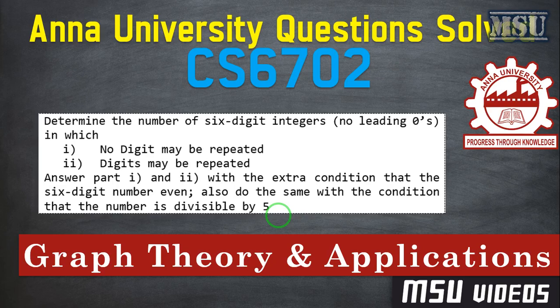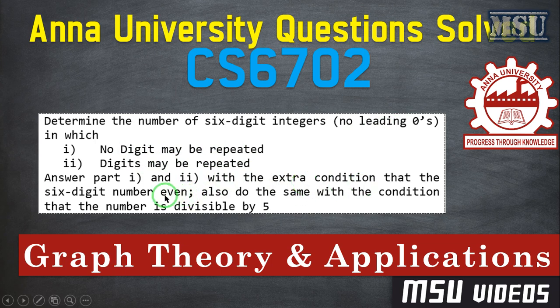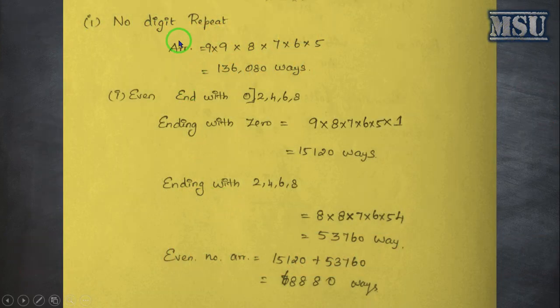Hi friends, welcome to MOC videos. In this video, we have to solve this problem: determine the 6-digit integer with no leading zeros, which means that the first digit does not contain any zero. No digit may be repeated, and digits may be repeated. For these two questions, we have to consider the extra condition that 6-digit numbers are even, and also 6-digit numbers are divisible by 5. So, let's solve this problem.